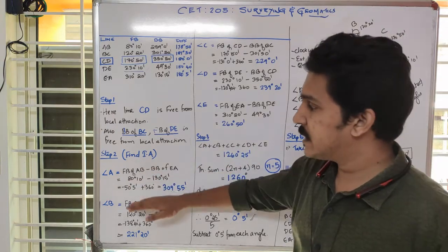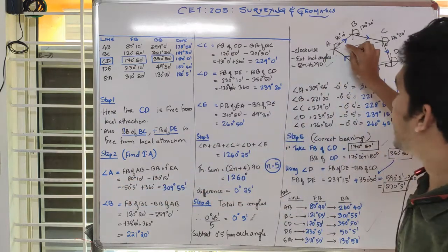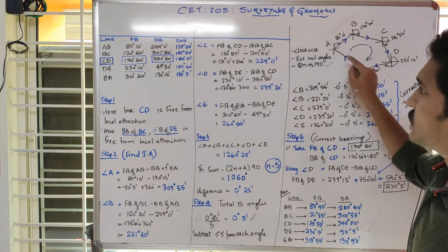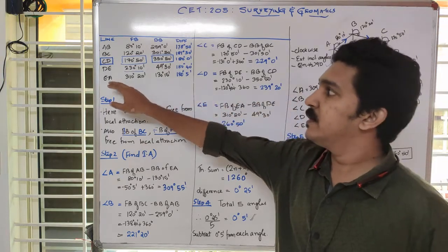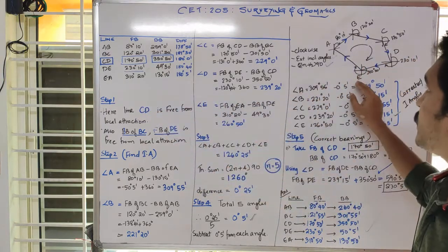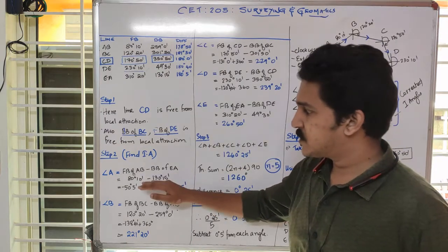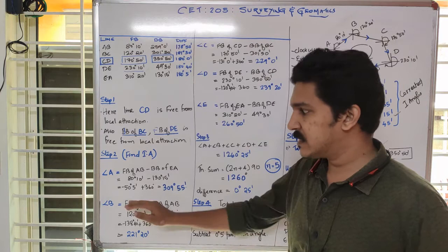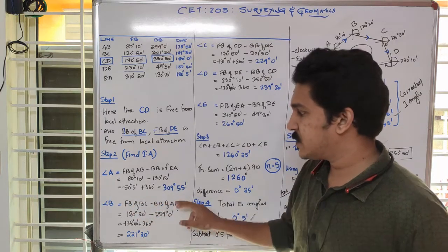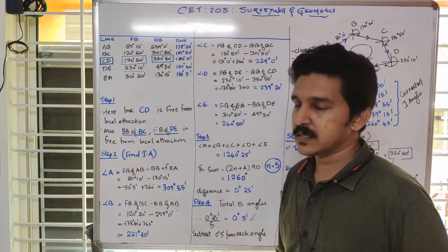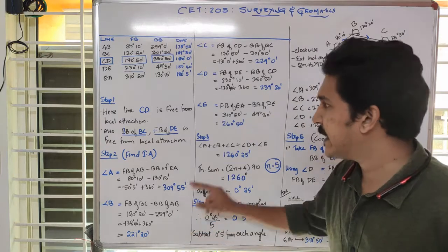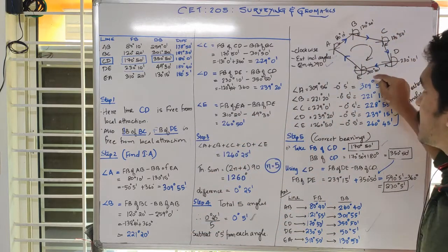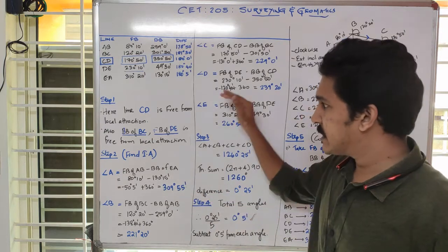With that information, we can find out the various angles. For example, angle A is found using the forebearing of the forward line AB and the forebearing of the backward line. Since we don't have the forebearing of AE, we convert it to the backbearing of EA. Then, subtracting the values, we get minus 50 degrees 5 minutes. Since it is negative, we add 360 to it, giving us 309 degrees 55 minutes. So all these angles we are getting will be exterior angles.